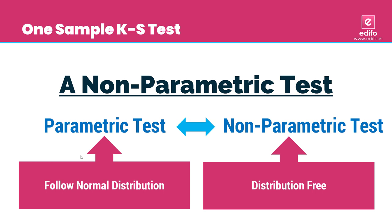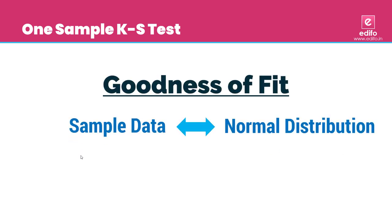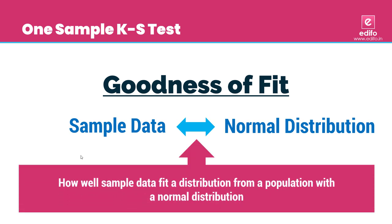The KS test is used to test the goodness of fit. Normally we have two sets of data: sample data and normally distributed (theoretical) data. The goodness of fit checks how well the sample data collected through a questionnaire fits a distribution from a population with a normal distribution.